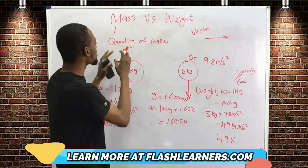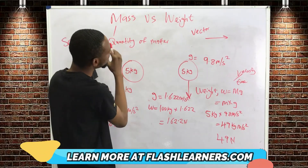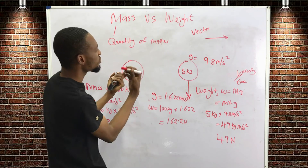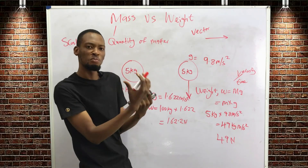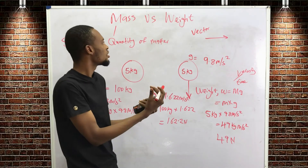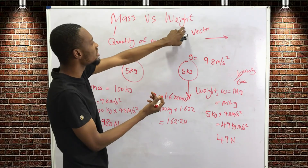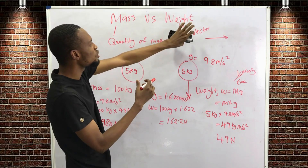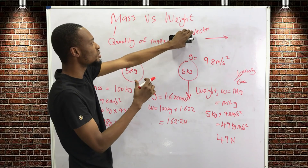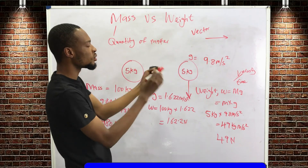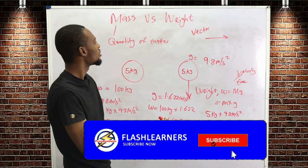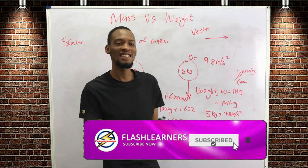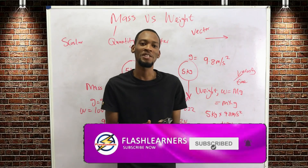We measure mass using a chemical balance or beam balance, which works on the principle of moments. We measure weight using a spring balance, which works on the principle of Hooke's Law. That's the difference between mass and weight. Thanks for watching — check out my other videos.